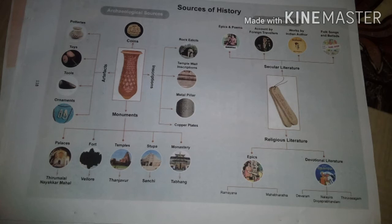Now let us see the sources of history. Sources of history are divided into two types: archaeological sources and literary sources.